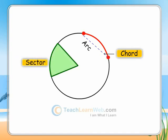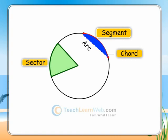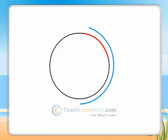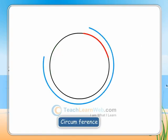A region in the interior of a circle enclosed by a chord and an arc is called a segment of the circle. The distance around a circle is its circumference.